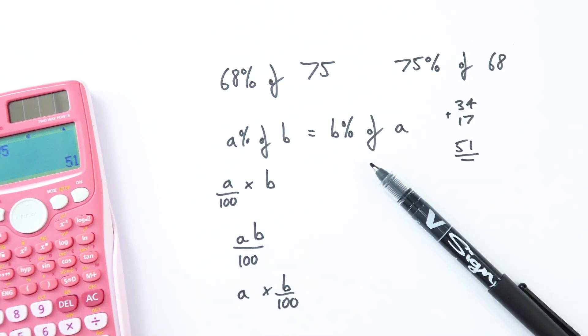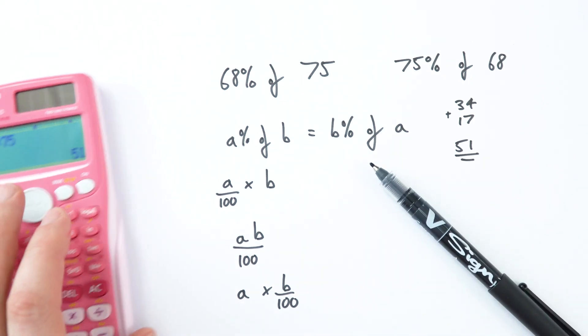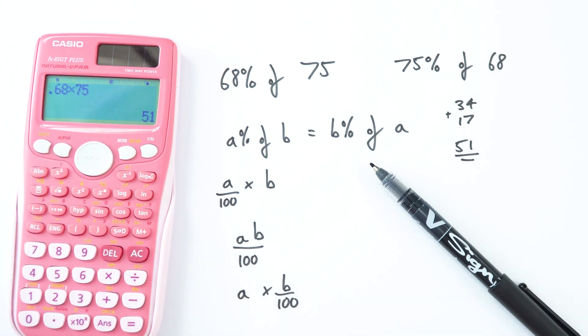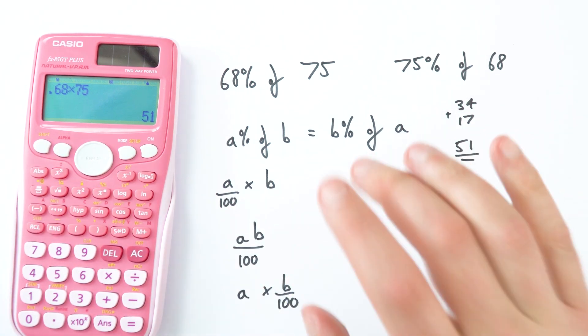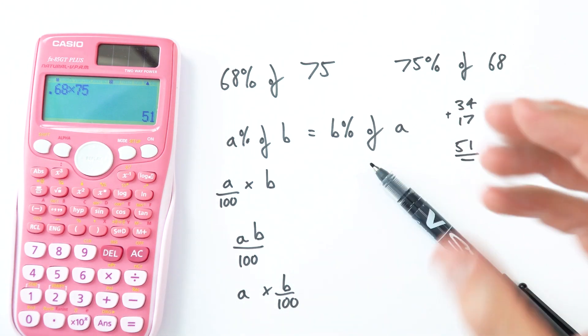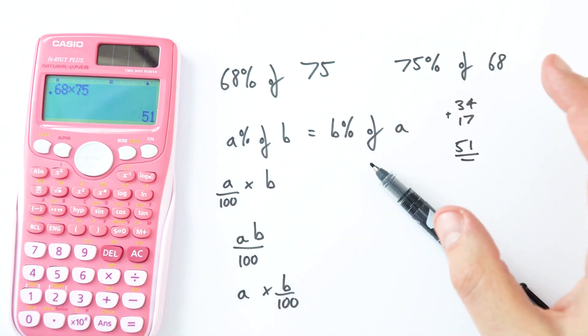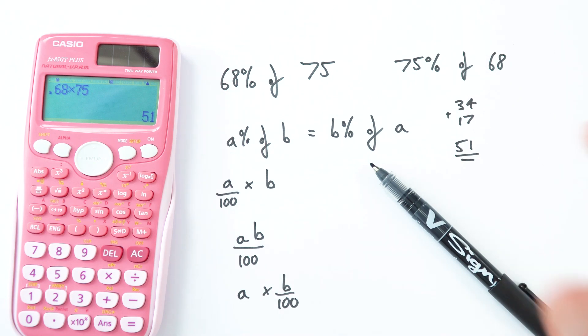So just a nice little mathematical trick that you can amaze people with, you can show off at parties, and it's something that I just find really pleasing, especially that little proof down there. But it's something that you can try several different things and just work it out in your head, and you'll see that A percent of B is always the same as B percent of A.